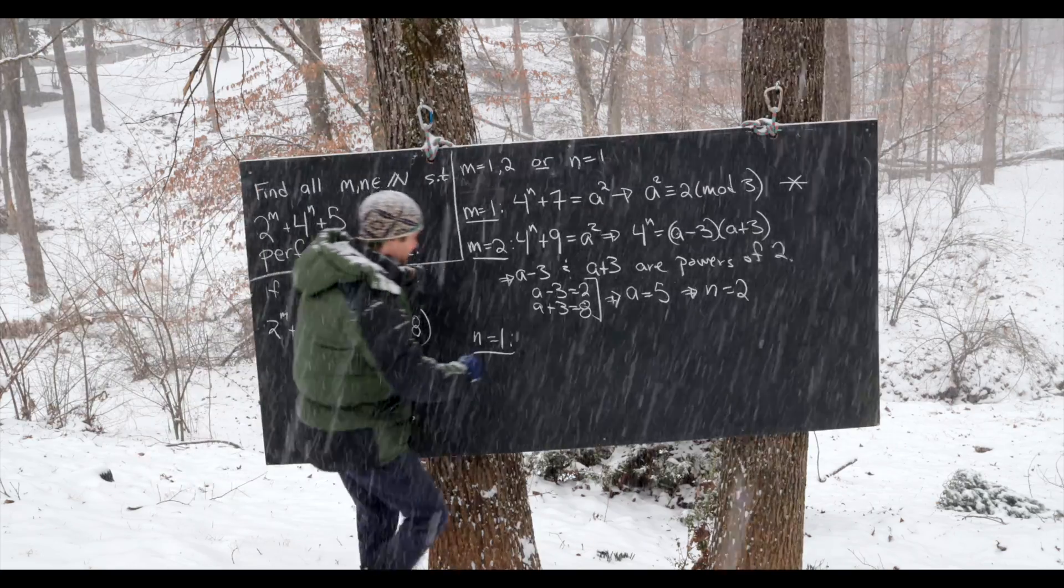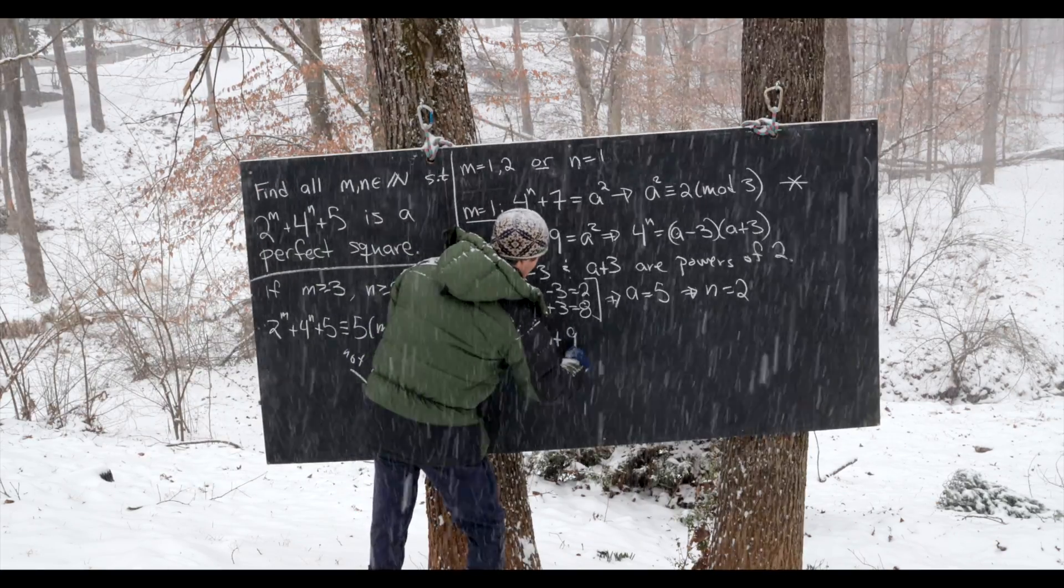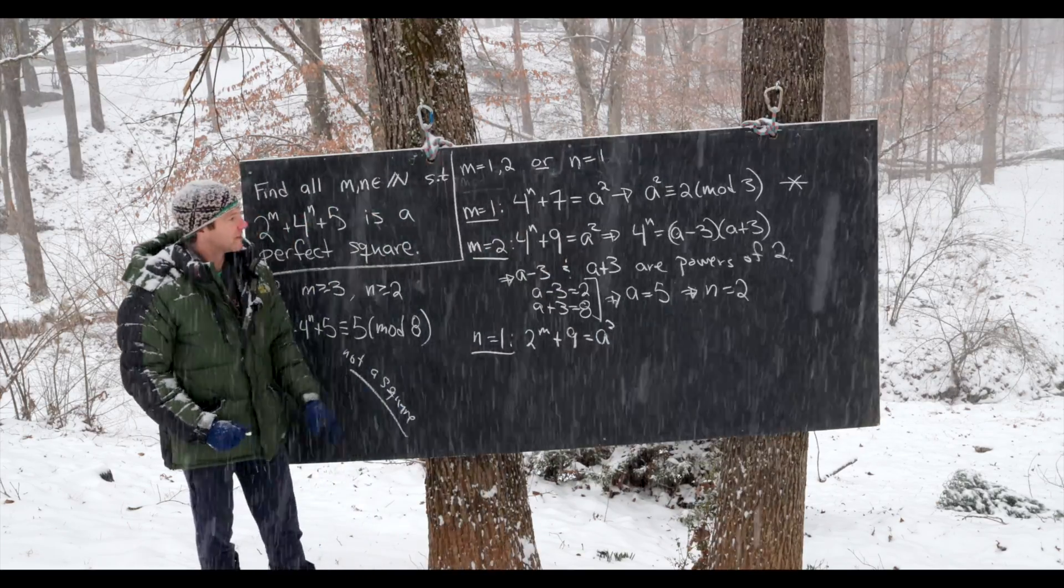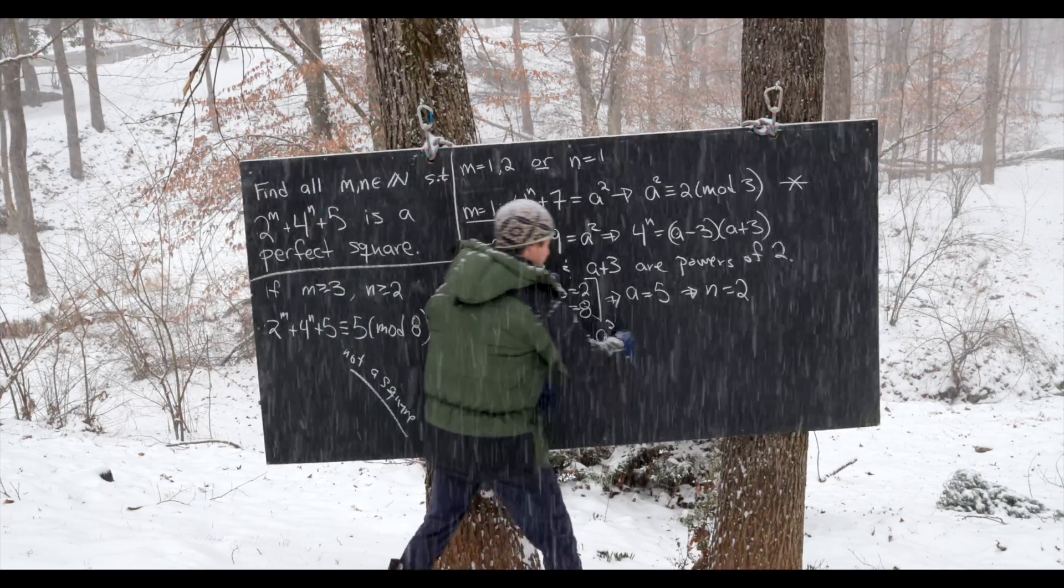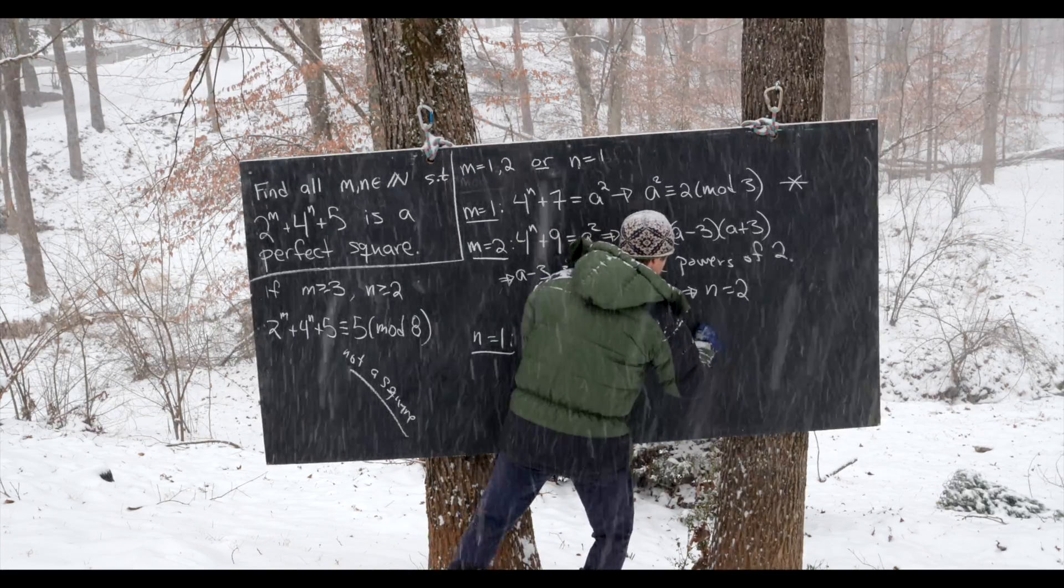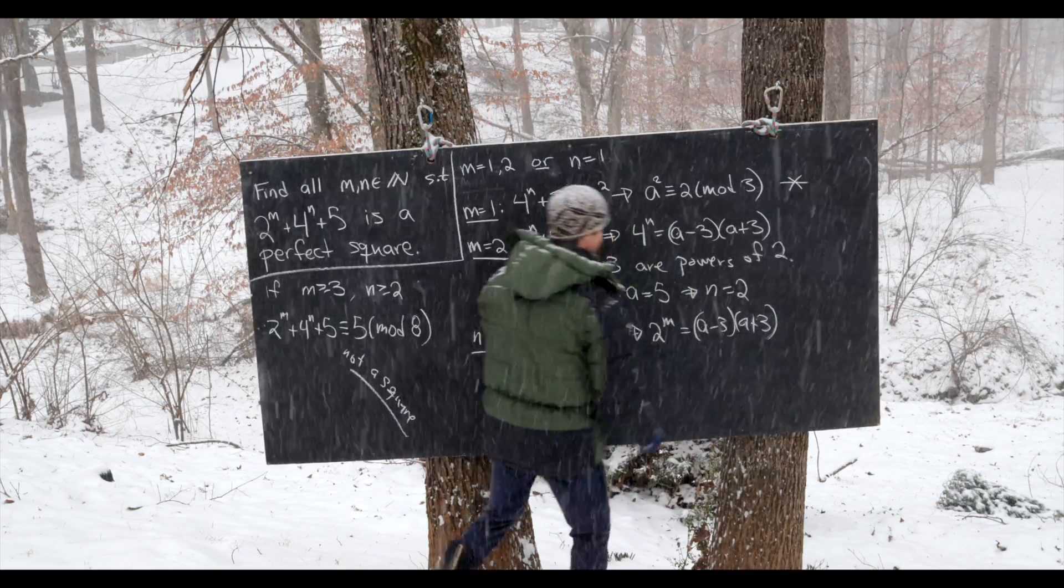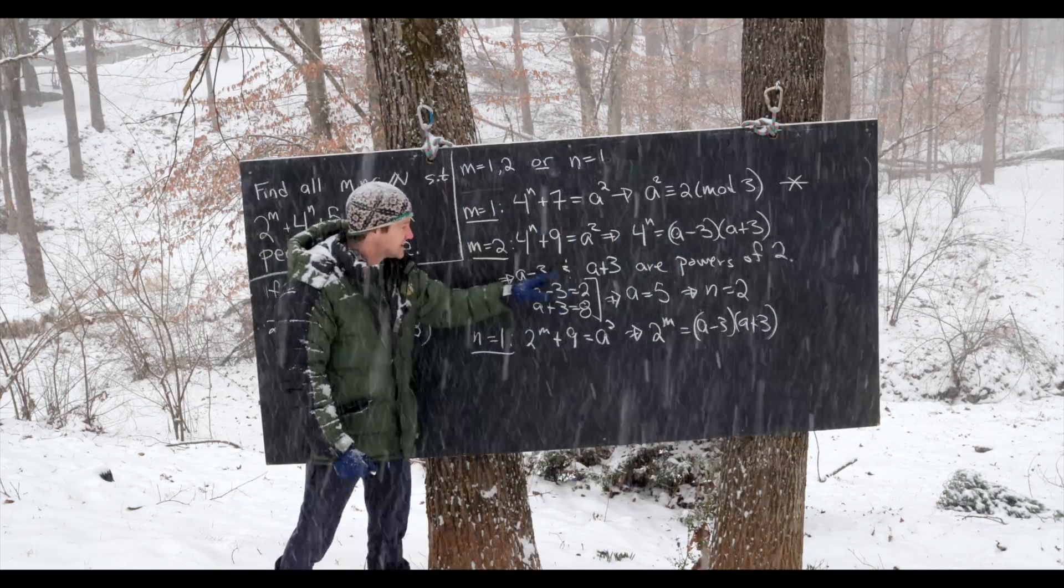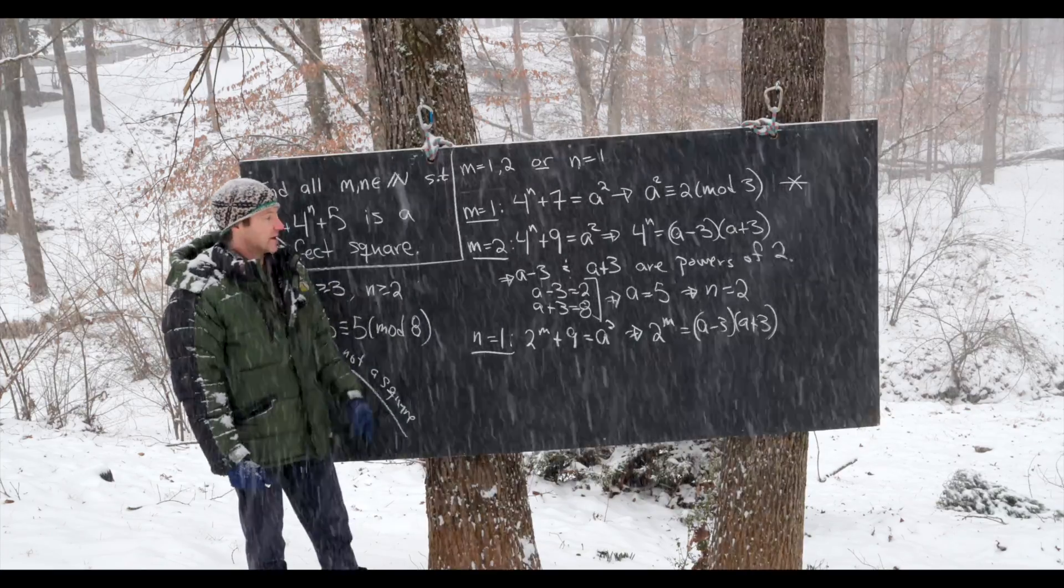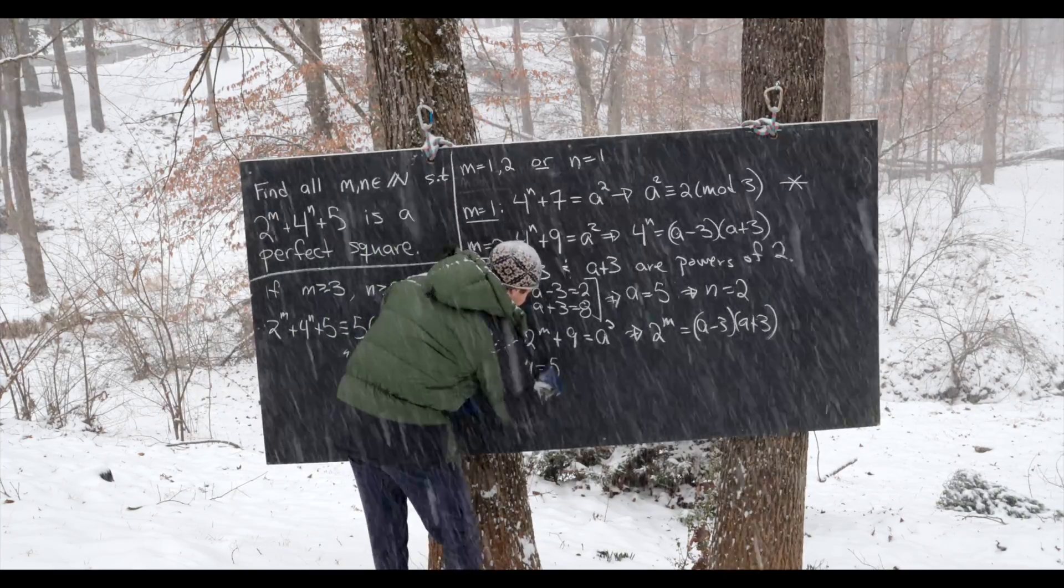But now it looks like 2 to the m plus 9 is equal to a squared instead of 4 to the n. But now we can play the same game. Notice this tells us that 2 to the m is equal to a minus 3 times a plus 3. But we have a very similar equation to this up here. a minus 3 and a plus 3 are powers of 2 again, which tells us that a equals 5,